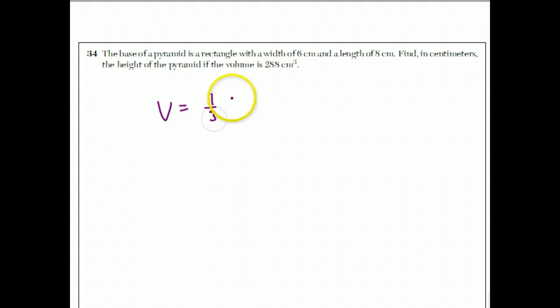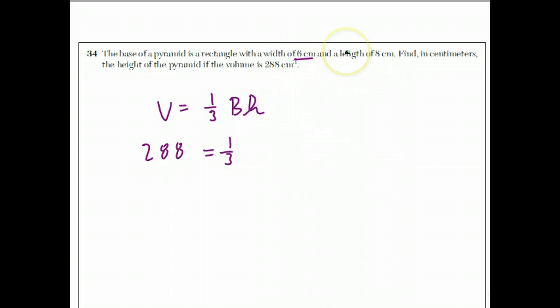Question 34. The base of a pyramid is a rectangle with a width of 6 centimeters and a length of 8 centimeters. Find the height of the pyramid if the volume is 288 cubic centimeters. The volume of a pyramid is one-third times the area of the base times the height. The area of the base — length times width — is 48.